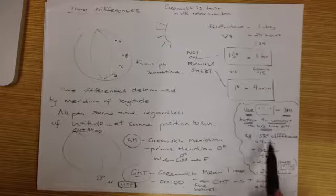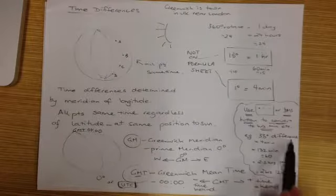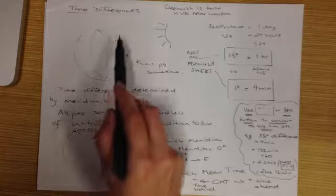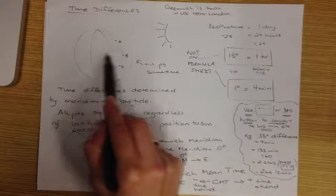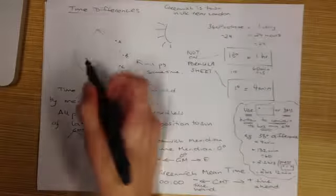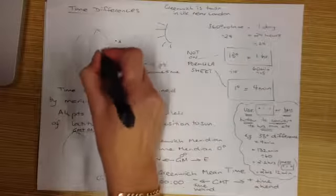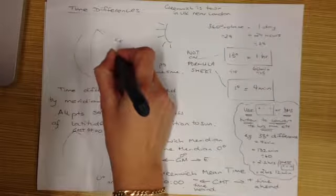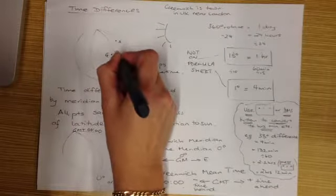So for example the one we looked at was 33 degrees difference between the two towns, so if there's a 33 degree difference between this, or perhaps this position here and a position over here which may be G, if there's 33 degrees difference between those,